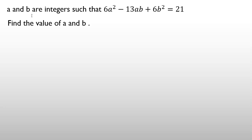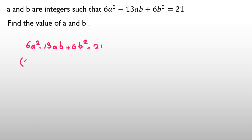A and b are integers such that 6a² minus 13ab plus 6b² equals 21. Find the values of a and b. Because they are integers, a good approach is factorization. We write the equation: 6a² minus 13ab plus 6b² equals 21, and we want to factorize the left side.